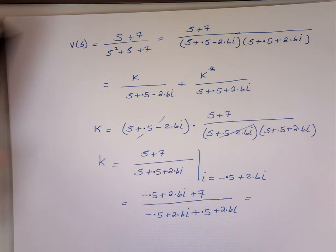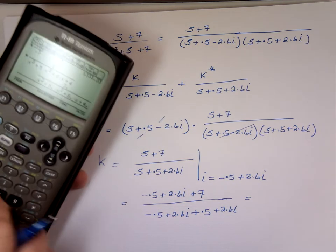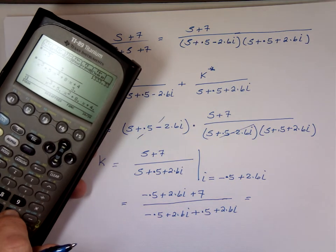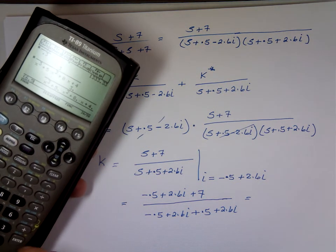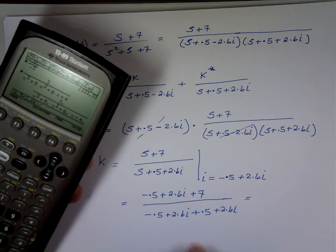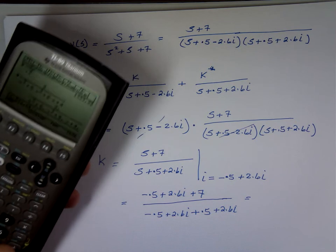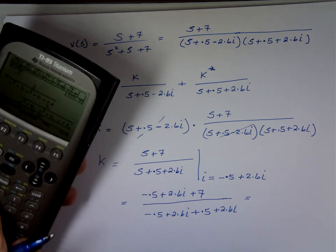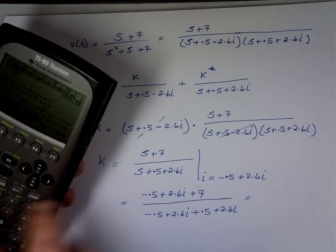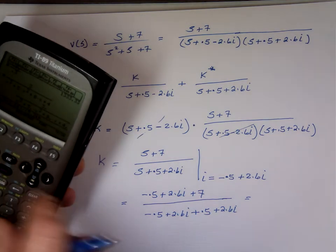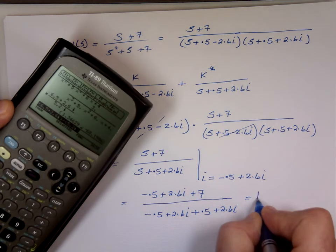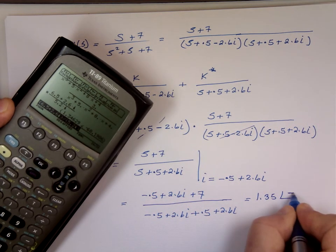I found my calculator. That's 6.5 on the top: 6.5 plus 2.6i, divided by — let's look at the bottom — that's 5.2i. And I came up with an answer of 1.35 angle negative 68 degrees.